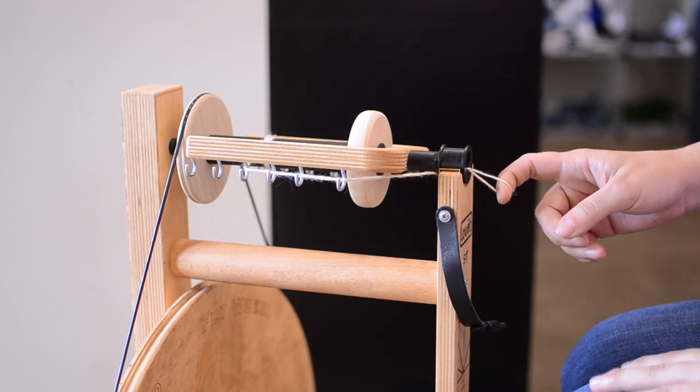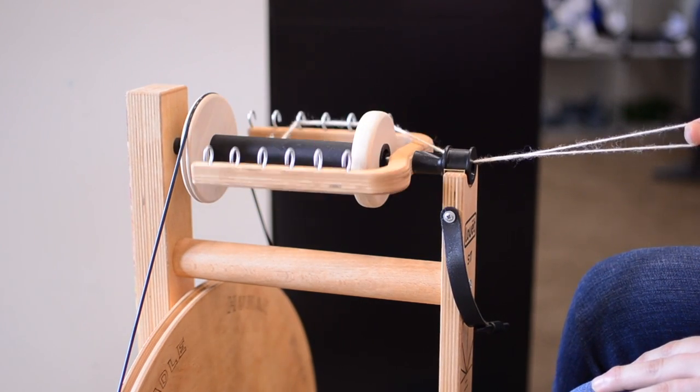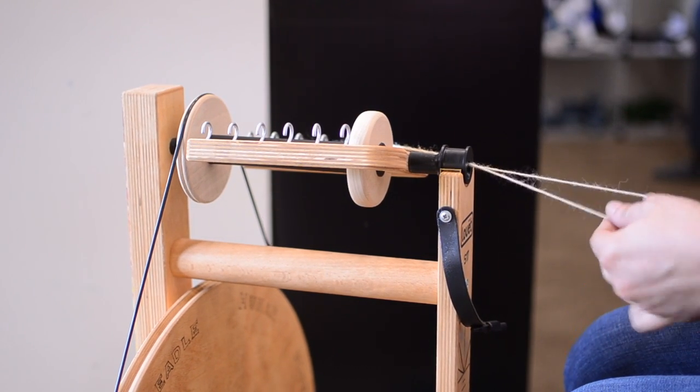This is the other thing, if you're coming from a scotch tension wheel, this is going to feel really weird. You can't just pull the yarn back out, you actually have to reverse treadle to get it off the bobbin. That took me a while to get used to.